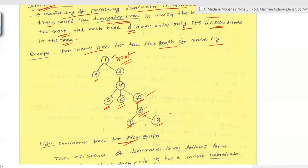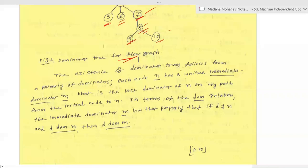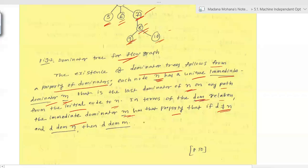The existence of the dominator tree follows from a property: each node n has a unique immediate dominator m, which is the last dominator of n on any path from the initial node to n. In terms of the dominator relation, the immediate dominator m has the property that if d ≠ n and d dominates n, then d dominates m.